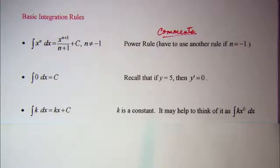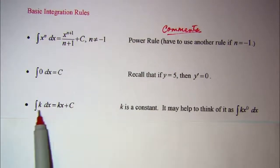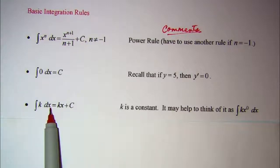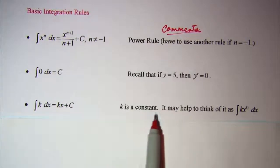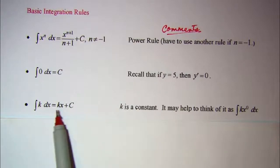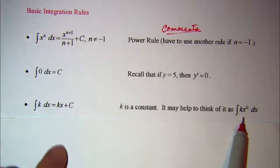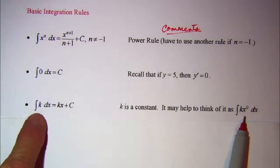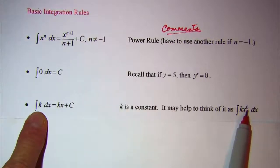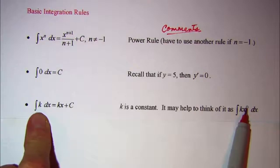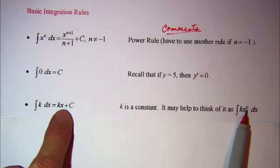Our next rule: if we integrate some constant k with respect to x, we get k times x plus our constant. It may help to think of this as the integral of k times x to the 0. Then you increase the exponent by 1 and divide by the new exponent, giving x to the first power divided by 1, which is still kx.